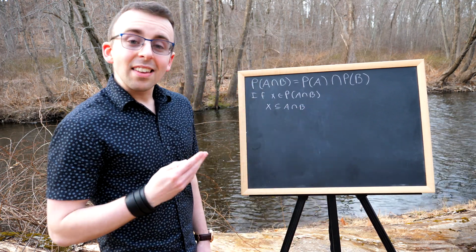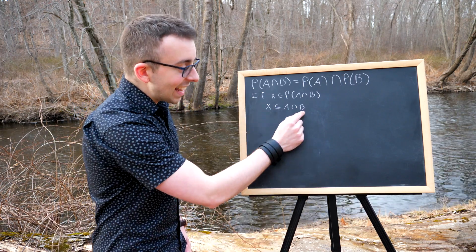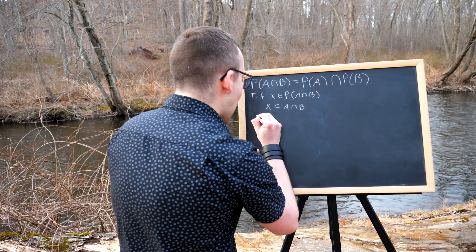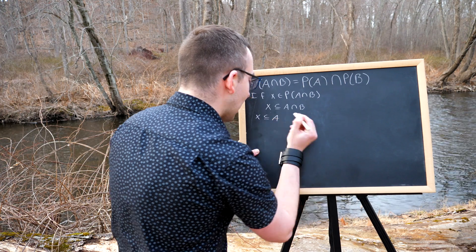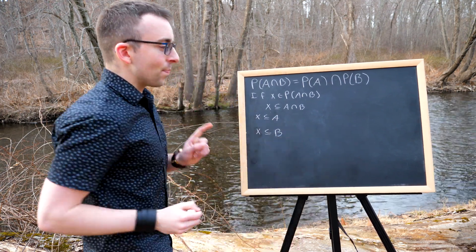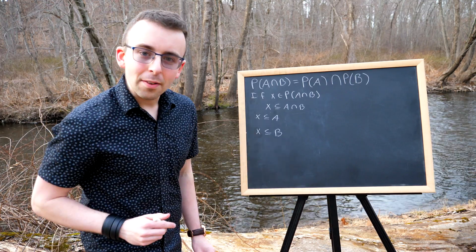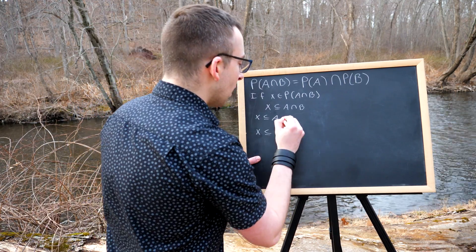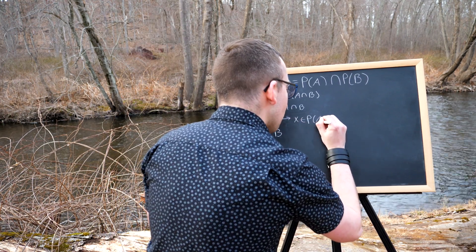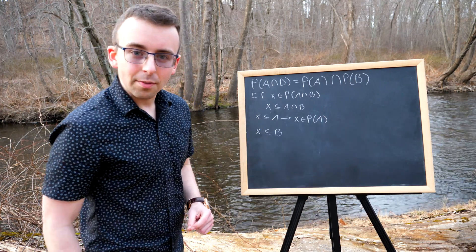So that means every element of X is in A and every element of X is in B, which means X is a subset of A and X is a subset of B. Now you see we're getting close. X is a subset of A, so by definition that means X is an element of the power set of A, since the power set of A just contains all the subsets of A.